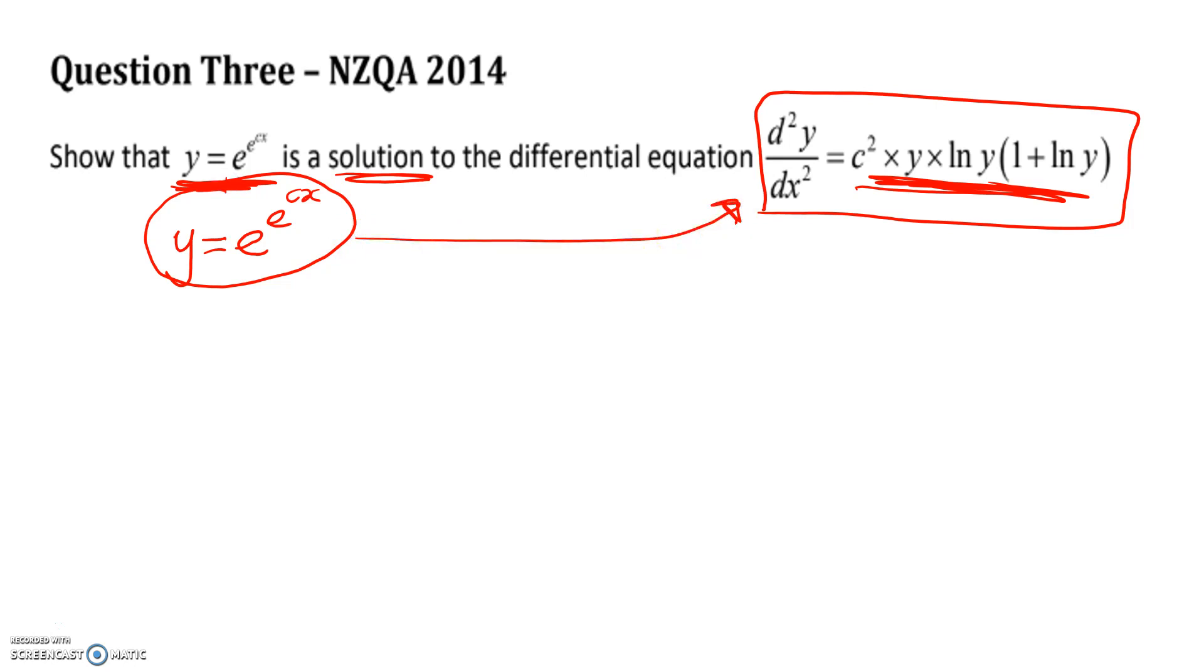So let's have a look at what to do first. Well, I don't like e to the power of e to the power of something. So to undo that, I can take logs of both sides. And that gives me the natural log of y is equal to e to the power of cx. So this is pretty easy to differentiate now, as long as I remember how to do implicit differentiation.